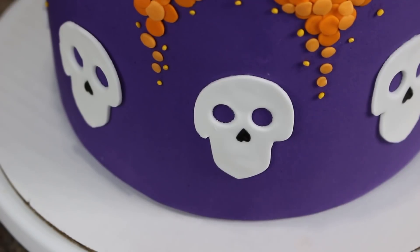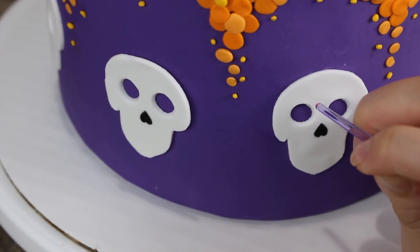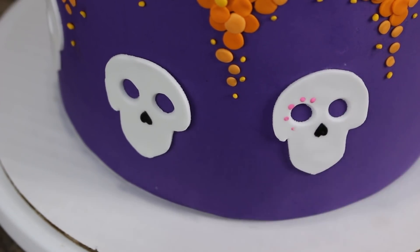I attached those to my bottom tier using a little bit of shortening and then I drew on the noses using some more of my black food coloring gel and my fine tip paintbrush and I mixed white food coloring gel with pink and purple and green and blue etc. and then just painted on each design for the sugar skull. I just made it up you can do whatever you want.